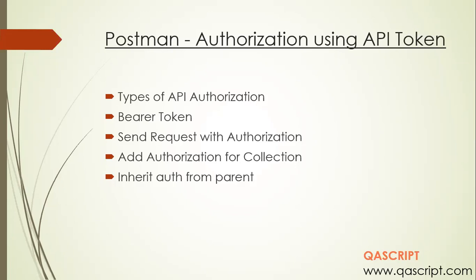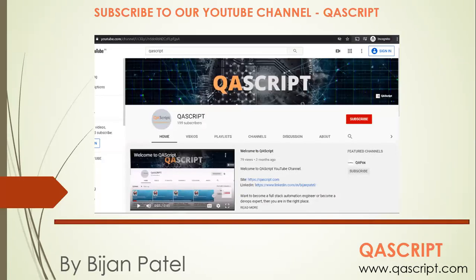We are going to briefly look at what types of API authorization are available in Postman. We are going to look specifically at a type called the bearer token — we'll generate a bearer token and then use it in our requests. We'll see how to send a request using bearer token authorization, and we are also going to add that authorization into a collection rather than just a single request, so every request can inherit that authorization from the collection.